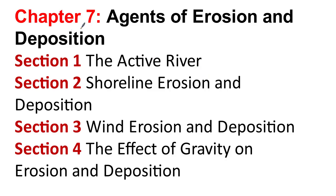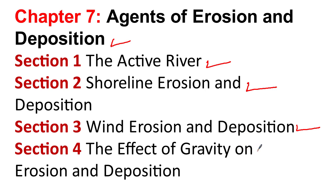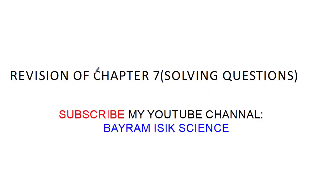Hi. Chapter 7: Agents of Erosion and Deposition. There are four sections. Section 1: Active Rivers. Section 2: Shoreline Erosion and Deposition. Section 3: Wind Erosion and Deposition. Section 4: The Effect of Gravity on Erosion and Deposition. We are going to review that chapter and solve some questions.